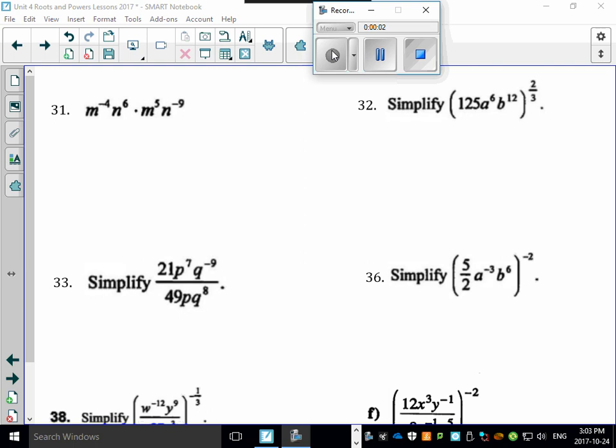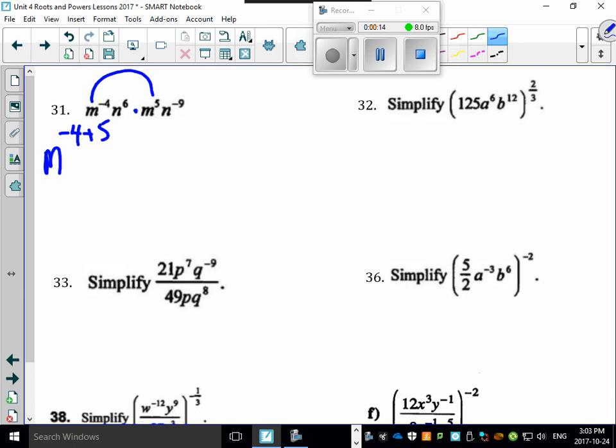Okay, so I've got some great questions for you to try here. Check this out. You've got m to the minus 4 and m to the 5. Because it's multiplication, we have to just add these up. If you add this up, this works out to be m to the 1, which is nice and easy to do.